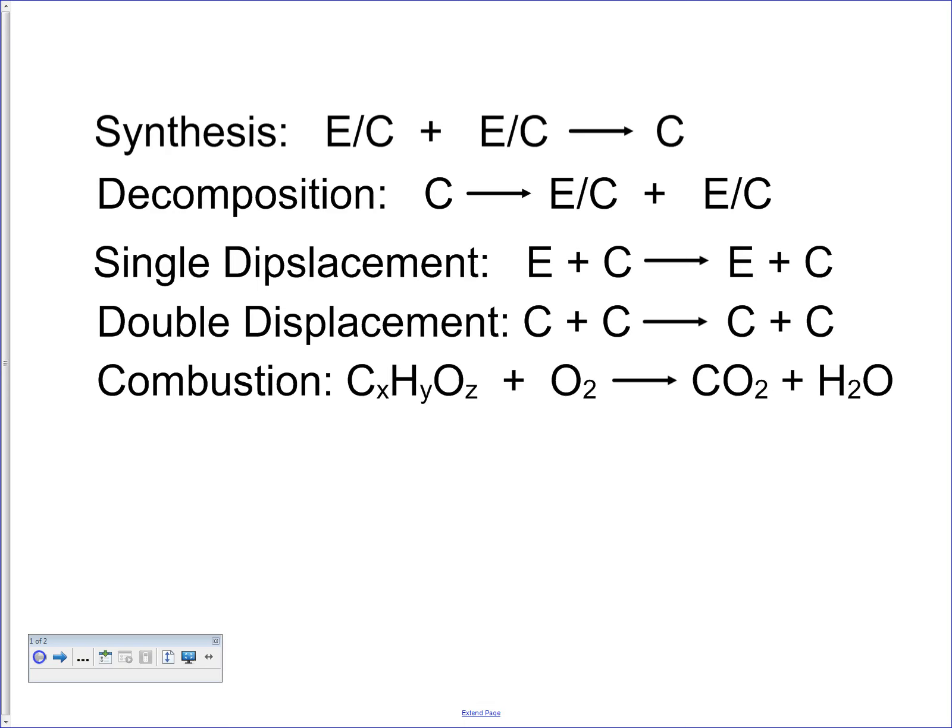For single displacement, we've got element plus compound, like usually a metal coming in here like copper or zinc or silver, and it's making element plus compound. Double displacement we've got two compounds coming in. The metals in front usually are switching partners, and we get two compounds in the end.